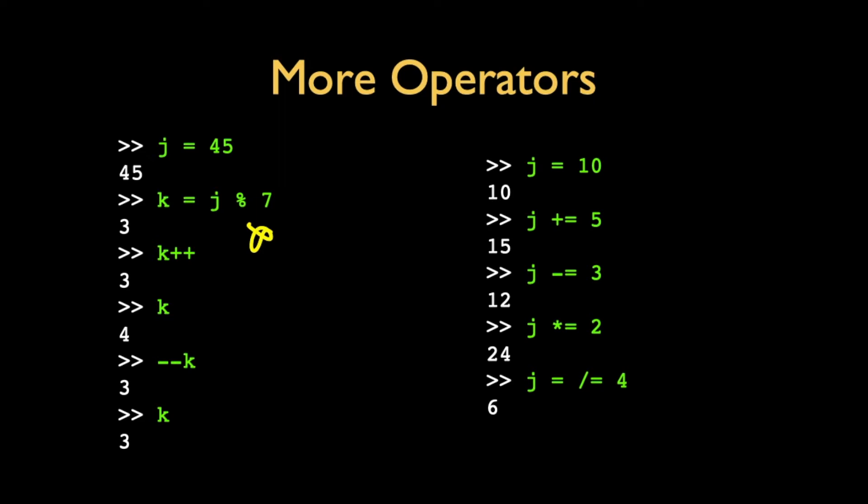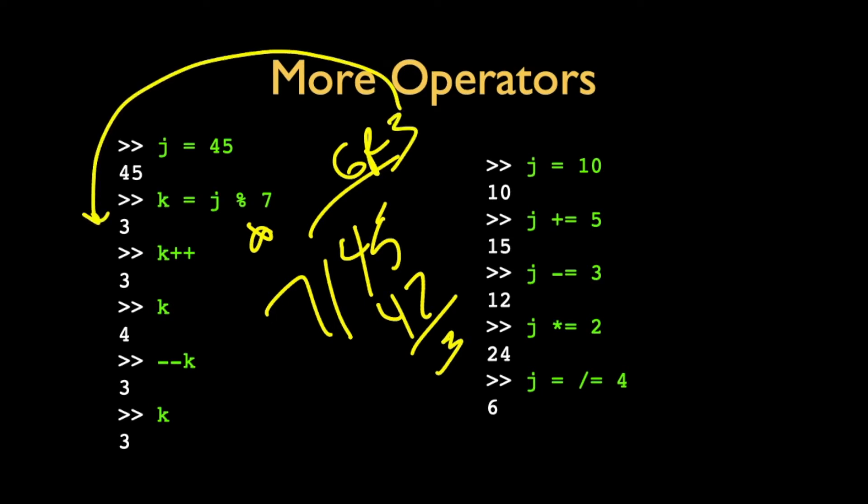More operators like the modulo operator. Modulo operator is the percent sign. And that is the remainder operator. So, 45 divided by 7 is 6 remainder 3. And that remainder, 45, 7 is 6, 42, 3 remainder 3. That 3 is what goes there. So, division with truncation will give you the 6. But the remainder will give you the 3.